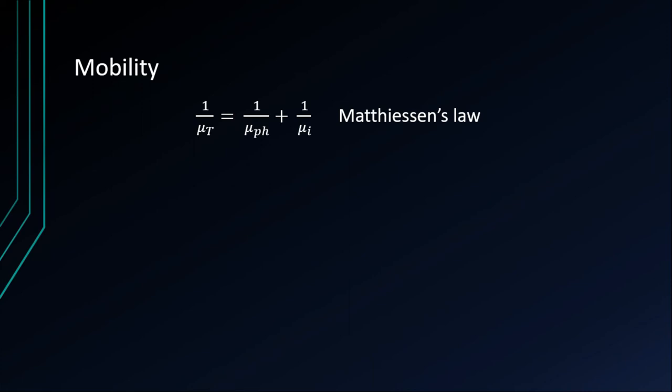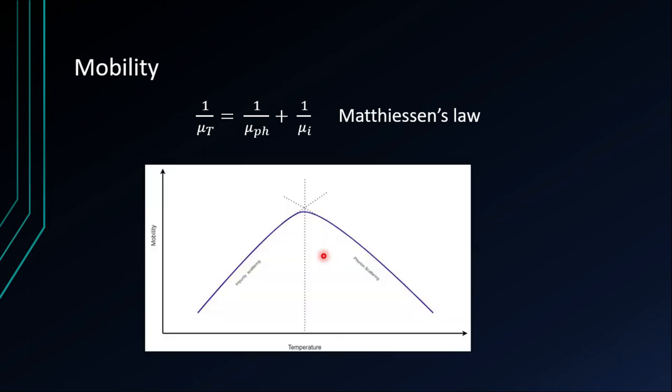So with Matthiessen's law, we have the total mobility equation, which is 1 by μT equals 1 by μ phonon plus 1 by μ impurity. This is a simple equation considering the resistivity equal to resistivity of the phonon plus resistivity of the impurity. If you consider this plot of mobility versus temperature, we can see that mobility is highest at a temperature where mobility is balanced between the impurity scattering and the phonon scattering.